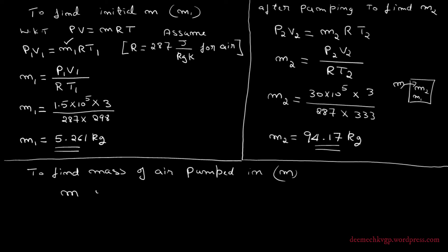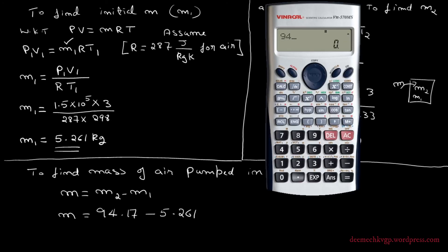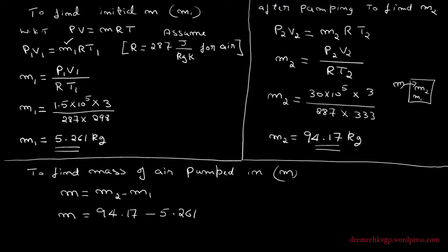Now we can find the mass of air pumped in: M = M2 − M1 = 94.170 − 5.261 = 88.909 kg, which we round to 88.91 kg. This is the mass of air pumped into the vessel.